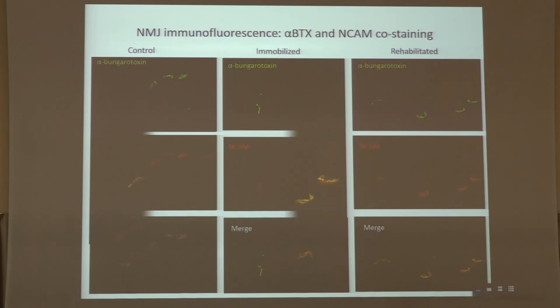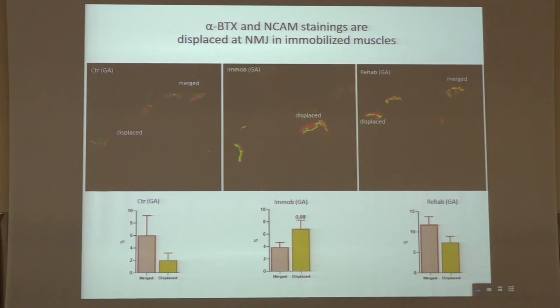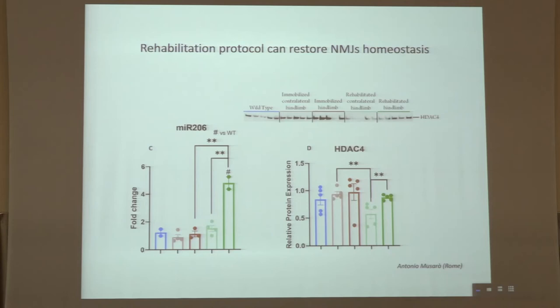In rehabilitated mice, we observed an intermediate situation with some NMJs co-localizing the two signals and some NMJs in which the two signals were still displaced. We counted the percentage of NCAM signals — displaced or merged — in the three different conditions. In immobilized mice, the percentage of NCAM clearly showing displacement of the two stainings was increased. This was partially rescued by rehabilitation, indicating that during immobilization, there are early events involving displacement and redistribution of NCAM within the neuromuscular junction, suggesting NMJ instability.